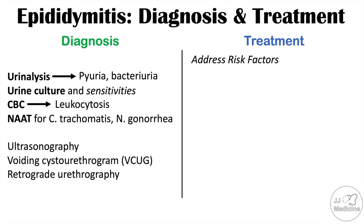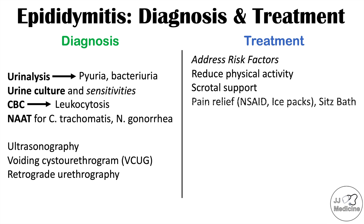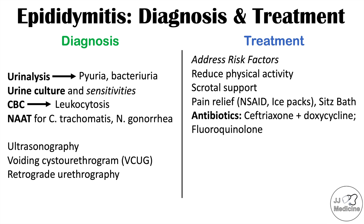Treatment often involves addressing the underlying risk factors. If caused by physical activity, irritation, or injury, reducing those activities is important. Scrotal support can be utilized, and pain relief using NSAIDs like ibuprofen, ice packs, and sitz baths can be helpful. For infective causes, antibiotics are important: ceftriaxone and doxycycline are used to treat sexually transmitted diseases like chlamydia and Neisseria gonorrhea, and it is important to also treat the patient's partner.